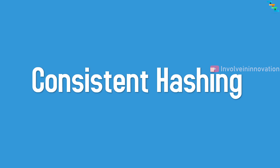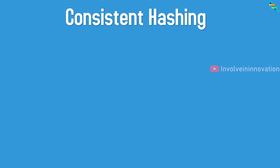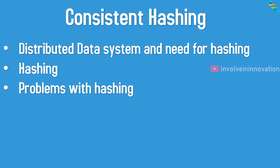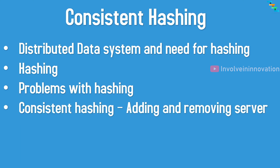Consistent hashing is one of the very important and interesting topics in today's distributed systems world. We will cover: what is distributed data systems and why we need hashing; how to use hashing to map requests to different servers; problems with hashing and the need for consistent hashing; and scalability in consistent hashing — how we can add or remove servers on the fly.